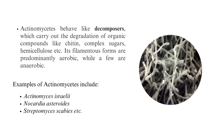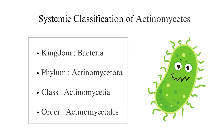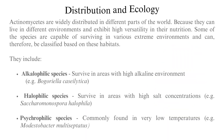Filamentous forms are predominantly aerobic while a few are anaerobic. Examples of actinomycetes include Actinomyces israelii, Nocardia asteroides, and Streptomyces scabies. Systematic classification: actinomycetes belong to kingdom Bacteria, phylum Actinomycetota, class Actinomycetia, and order Actinomycetales.